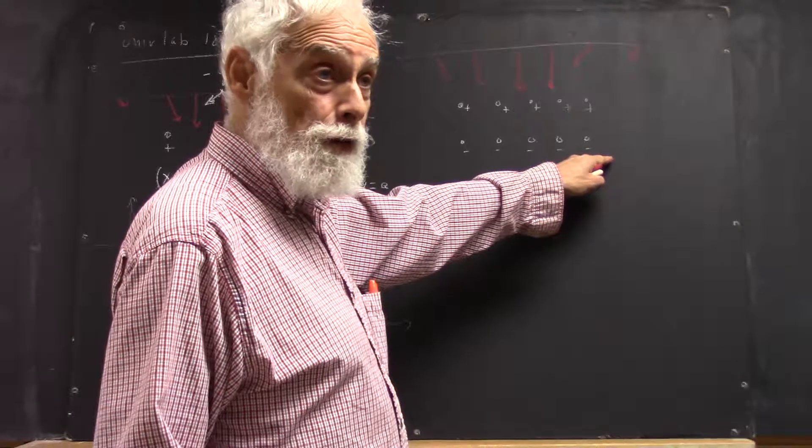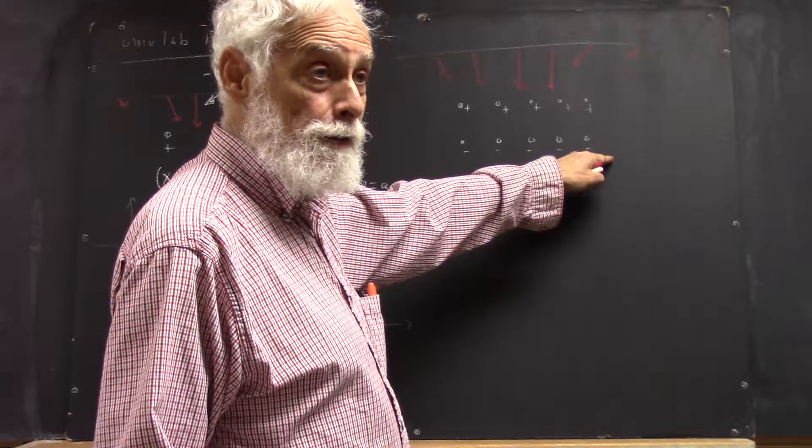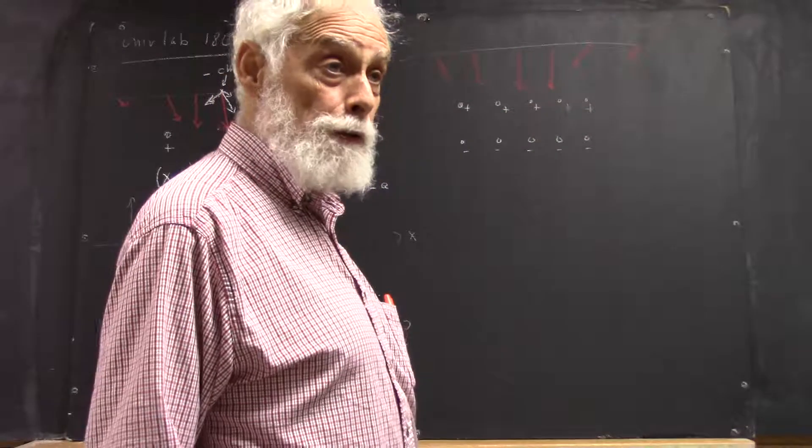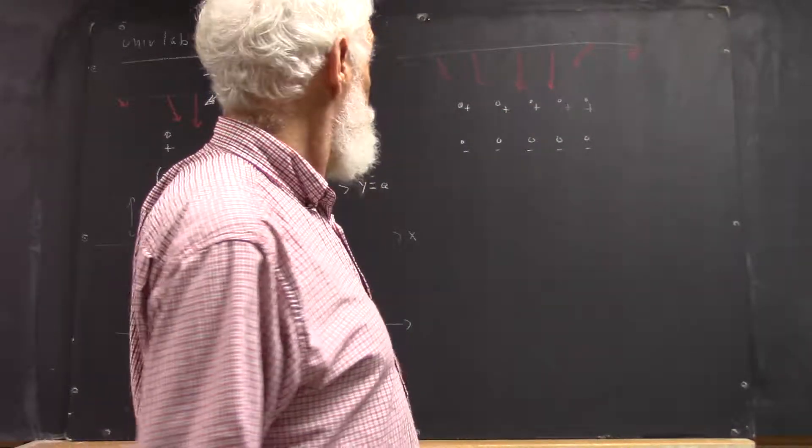What are we going to get from the negative charge here? We're going to get a field that looks a lot like this, right? But what are the differences going to be?